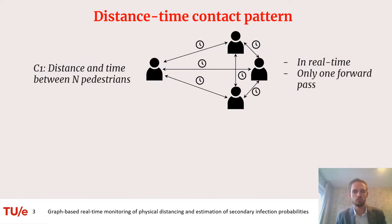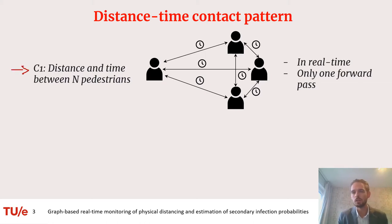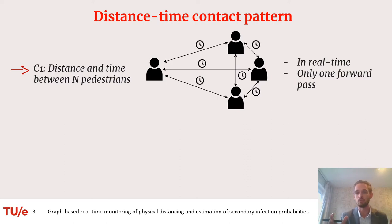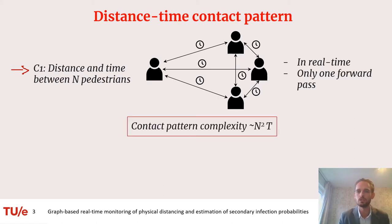There are two challenges connected to these questions. The first challenge is connected to the complexity of the task, because we want to compute all the distances and times between n pedestrians in our facility in real time and with only one forward pass — we don't want to roll back time. Computing all these mutual distances scales as n² × t, where n is the number of pedestrians and t is time.